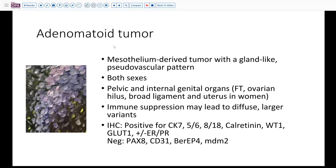It is known that this is a mesothelium-derived tumor. It has this gland-like or pseudovascular pattern. It occurs in both sexes, usually in the pelvic or internal genital organs — the fallopian tube, ovarian hilus, broad ligament, and uterus in women; epididymis, scrotum, and so forth in males. Interestingly, immunosuppressed states may result in diffuse or larger type tumors, and that may have been a prompting factor in our patient who was somewhat immunosuppressed because of the chemotherapy, which may have prompted growth.